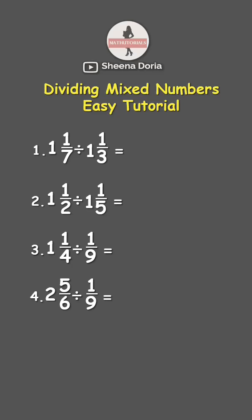First, convert each mixed number into improper fraction. So that's 7 times 1, which is 7, plus 1, which is 8. And then keep the denominator 7. 3 times 1 is 3, plus 1 is 4. Then keep denominator 3.